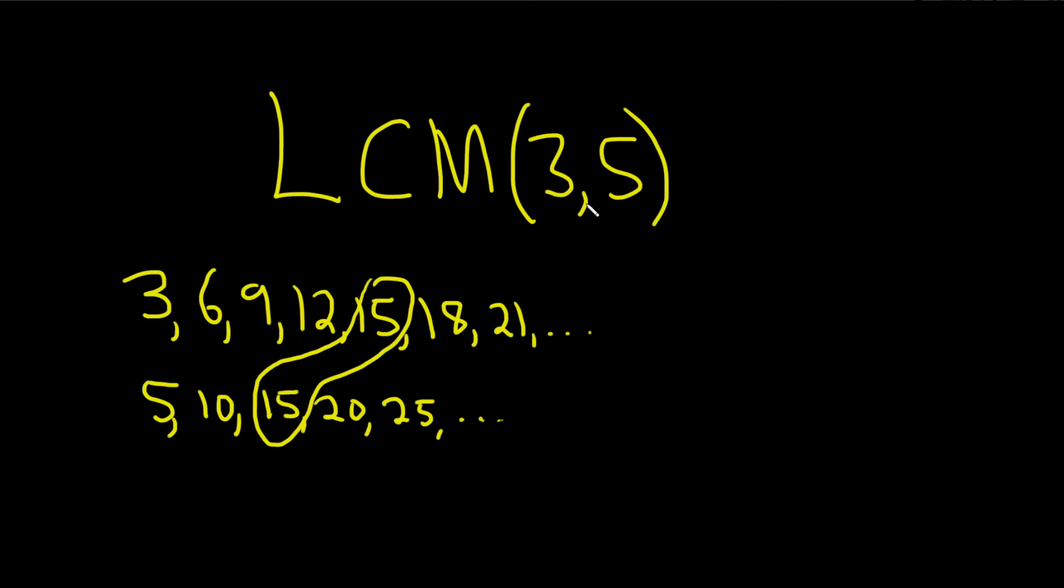For example, 30 is a common multiple of these numbers. But 30 is going to be over here, we didn't even get to it. So it's just the smallest one, so you don't have to keep going. In this case, the answer is 15.